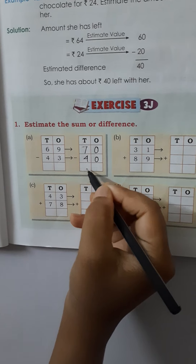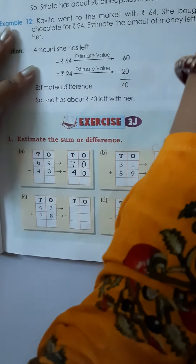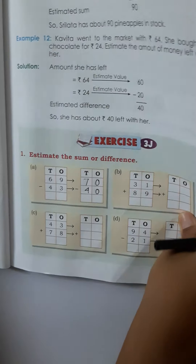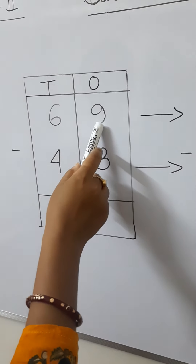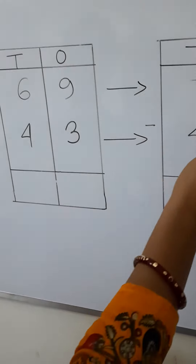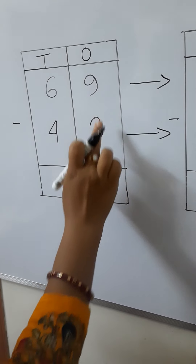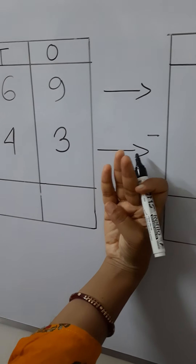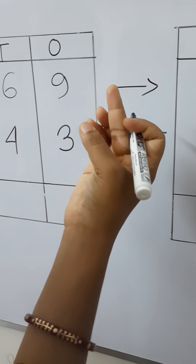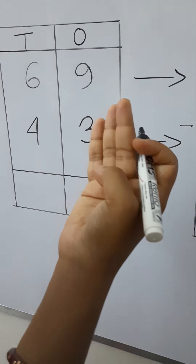Now we have to do the subtraction and show the differences with some board work. So: estimate values are 70 and 40. For the actual subtraction of 69 minus 43 — ones place: counting up from 3 to 9 gives 6, so ones place is 6. Tens place: counting up from 4 to 6 gives 2, so tens place is 2.